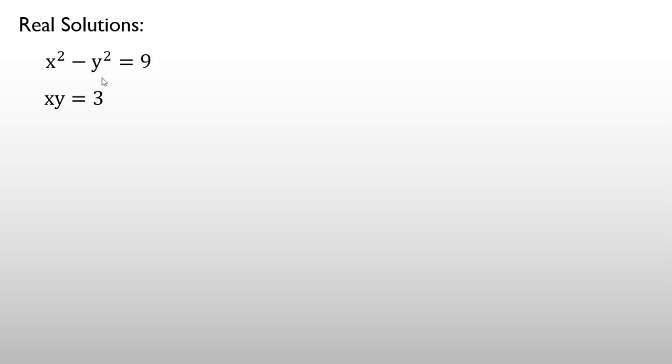x squared minus y squared equal to 9, xy equal to 3. We should solve it in real numbers. One important thing when we have two equations like this is to use replacements. Let's apply replacement. It can solve harder problems.